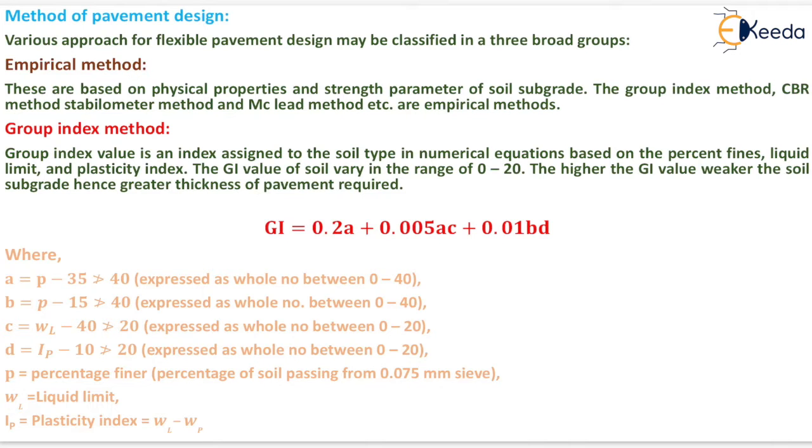The first one is empirical method. These are based on physical properties and strength parameter of soil subgrade. The group index method, CBR method, Stabilometer and Maclead method etc. are empirical methods. Now we will start with the first method that is group index method.